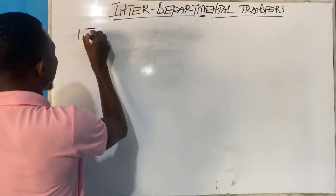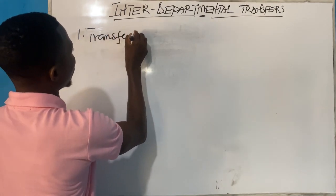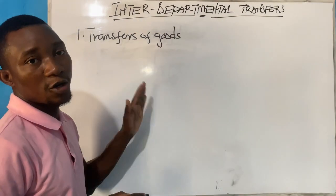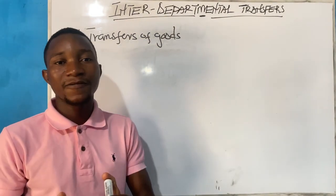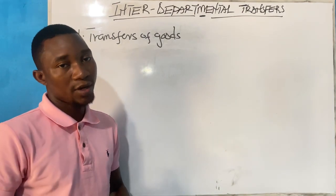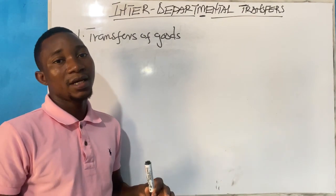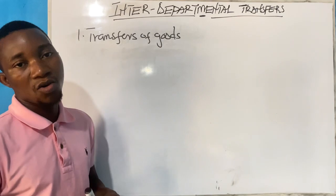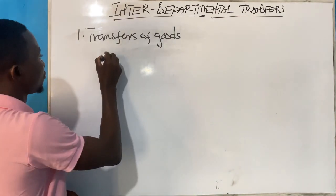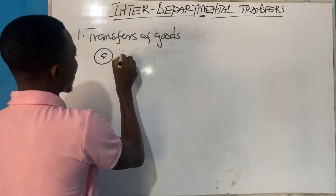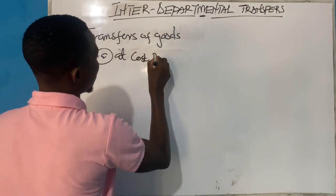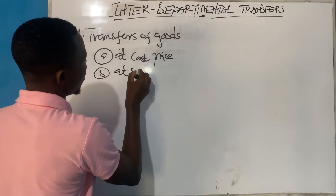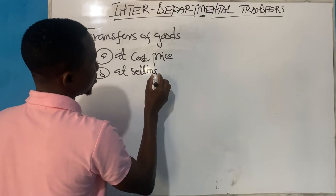The first one is transfers of goods. When we talk of transfers of goods, it is where goods are sent from one department to the other. This can be done in two different ways: the goods can be sent to another department either at cost price or at selling price.